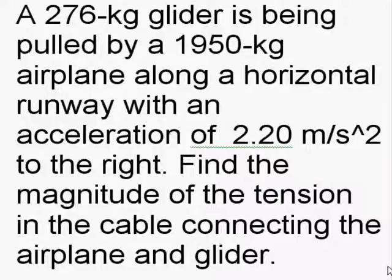A 276 kilogram glider is being pulled by a 1950 kilogram airplane along a horizontal runway with an acceleration of 2.20 meters per second squared to the right. Find the magnitude of the tension in the cable connecting the airplane and glider.